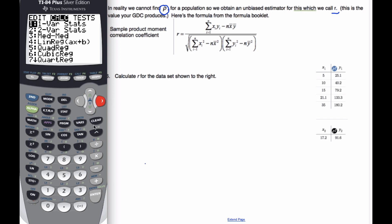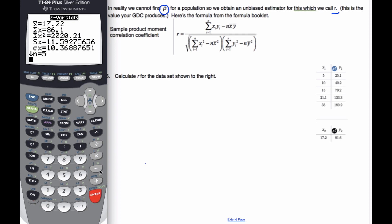if I go stat, calculate, I'm going to do two variable statistics. I have it already in my list entered. And so when I get this, I get x bar is 17.22. I also need the summation of x squared, which is 20.21.